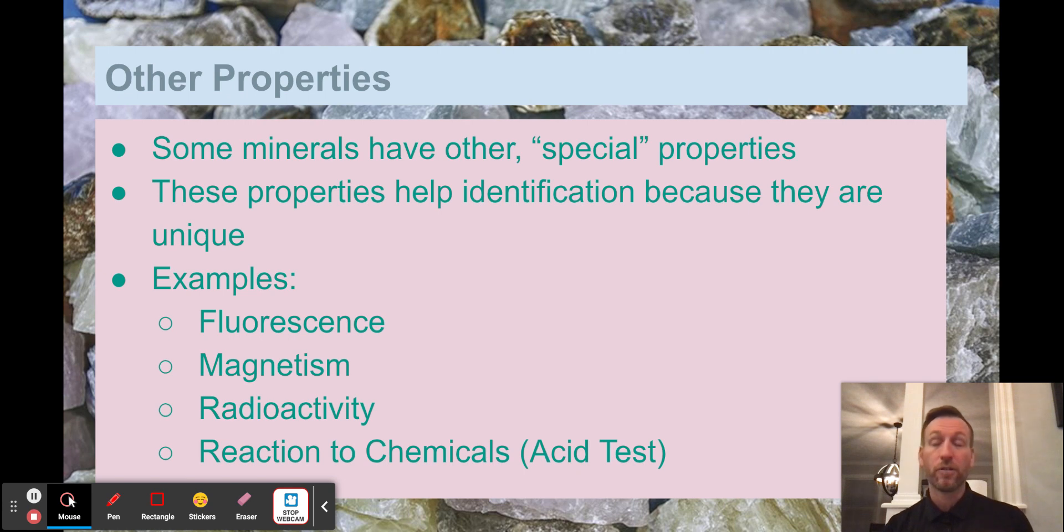So there are a number of minerals that will react to certain things in terms of acids. Vinegar is an acid that is usually typically what geologists would use to see if it would produce this bubbling. And that would be a giveaway for its identification. Okay. Oh, sorry for that beeping. That's my coffee machine. Yeah, you guys know how much I love my coffee. So that I think is the end. Yeah. Okay. So that's the end of the notes.